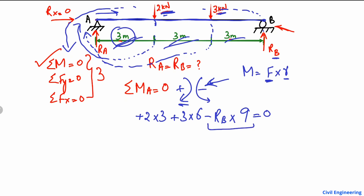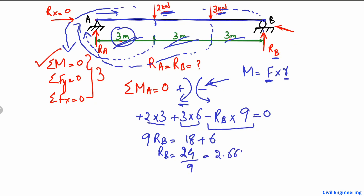Solving the equation, we shift the RB term to the right side: 9 RB equals 2×3 plus 3×6, which gives 6 plus 18 equals 24. Dividing 24 by 9, we get RB equals 2.66 kilonewtons. So the support reaction at point B is 2.66 kilonewtons.